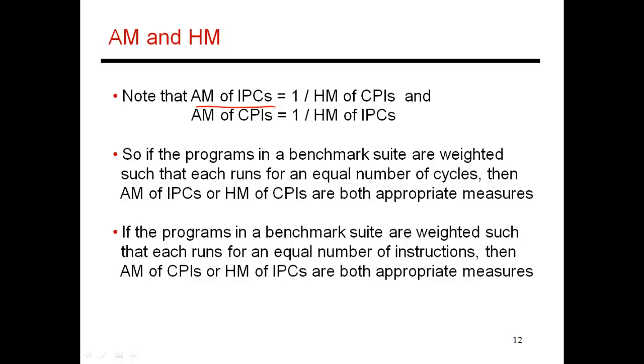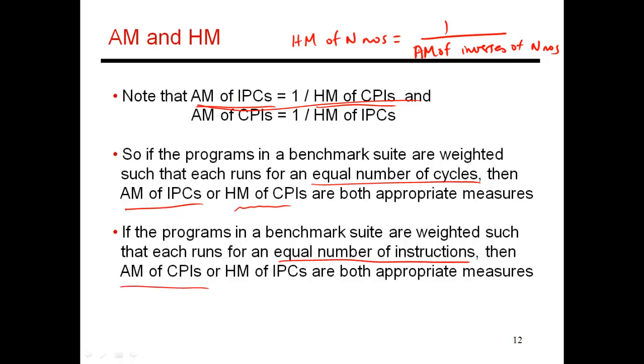I should also point out there is this relationship between AM of IPCs and HM of CPIs. AM of IPCs are somewhat equivalent to the harmonic mean of CPIs. Harmonic mean of n numbers is 1 by the arithmetic mean of the inverses of those n numbers. That's how you get this relationship between AM of IPCs and HM of CPIs. If you have a benchmark suite where you'd like to run each program for an equal number of cycles, then AM of IPCs is a pretty good measure, which is similar to using the HM of CPIs. If you'd like to weight the program such that they all execute for an equal number of instructions, then the AM of CPIs would be a more appropriate measure.